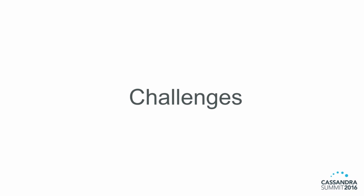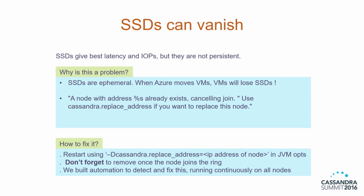The first and most interesting challenge is that SSDs can vanish. They give you amazing IOPS and latency, but they are also ephemeral — when nodes move around or when Azure is doing routine maintenance, they'll just vanish, and your data is lost. This typically shows up as Cassandra's replace address exception. You have to add that tag in the environment shell file and restart the DSC process. Importantly, don't forget to remove that line once the node joins the ring, otherwise the node won't be able to rejoin. We built automation to detect and auto-fix this.